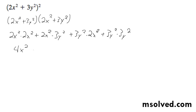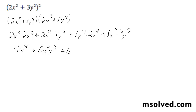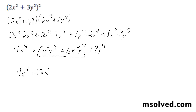So we get 4x to the fourth plus 6x squared y squared — sorry, that first term should be to the fourth — plus 6x squared y squared, and then plus 9y to the fourth. Finally, combining like terms, we get 4x to the fourth plus 12x squared y squared plus 9y to the fourth.